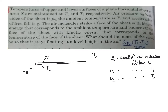Looking at the upper surface: one molecule of air approaches at speed V0 and bounces off at speed V1. At the lower surface, one molecule of air approaches at V0 and bounces off at speed V2. So there will be pressure P1 on the upper surface and P2 on the lower surface, giving forces P1·S and P2·S.